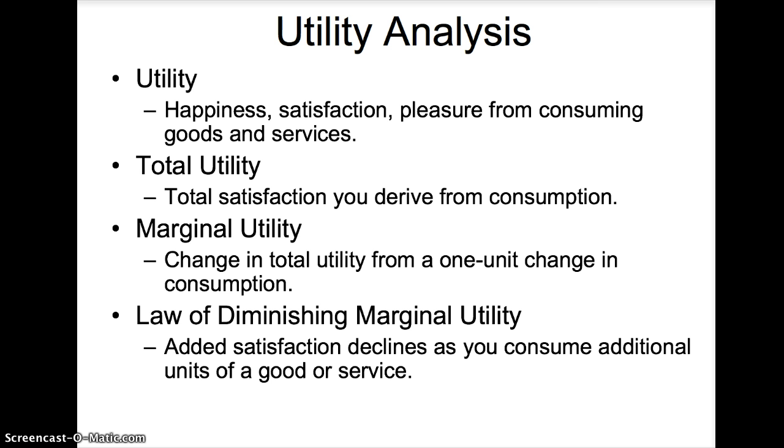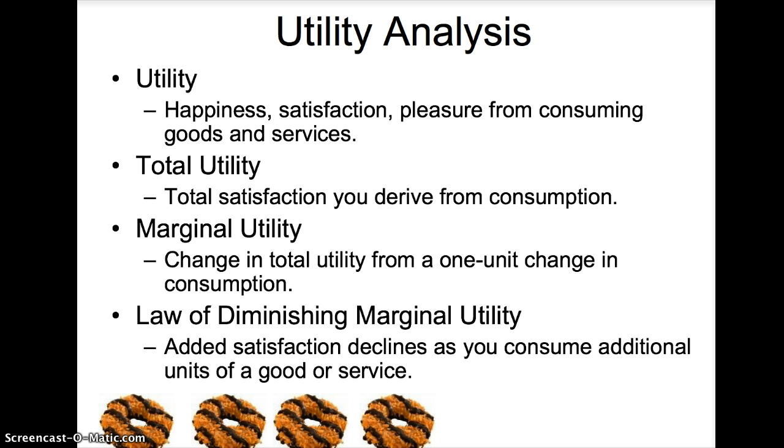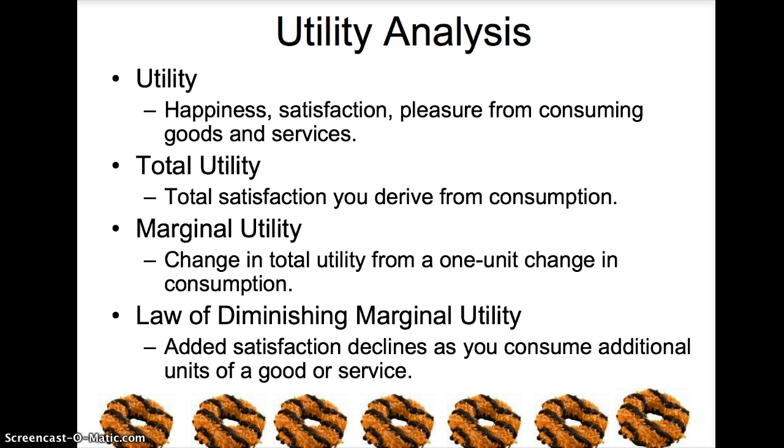I think a perfect example of diminishing marginal utility is Girl Scout cookies. The first cookie is so delicious since you haven't had one in a long time. The second cookie is very good, but not as tasty as the first. The third cookie is still good, then the fourth, fifth, sixth, seventh cookies are consumed and now you have a stomach ache and you regret eating so many cookies.